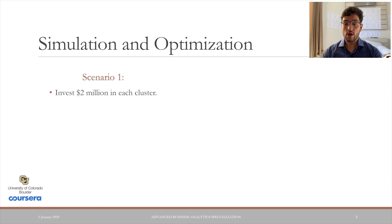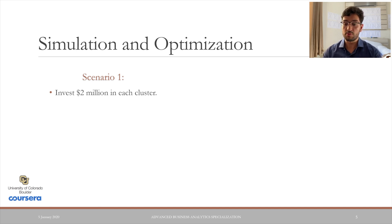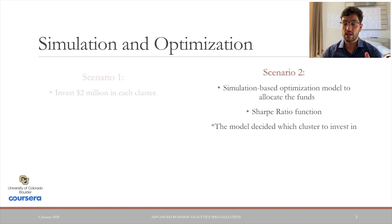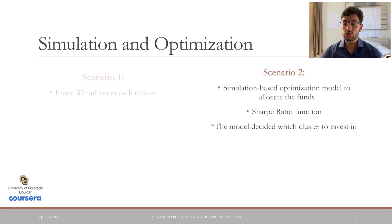Scenario one refers to a fixed amount of $2 million in each cluster. In scenario two, it was built an optimization model to allocate the funds, aiming to maximize the Sharpe ratio function, which measures the return of an investment compared to its risk. In short, the model decided which cluster to invest the $10 million in.